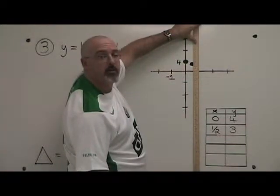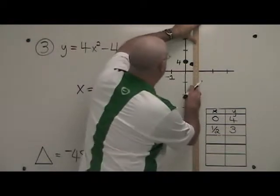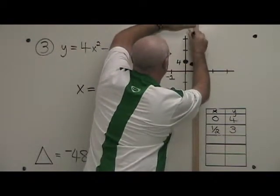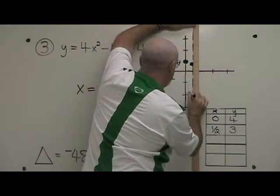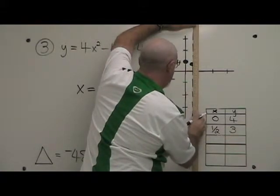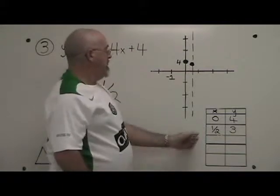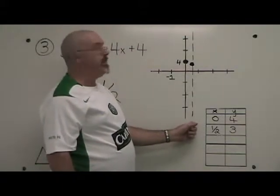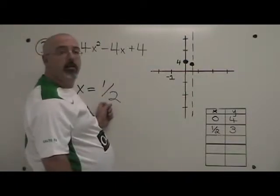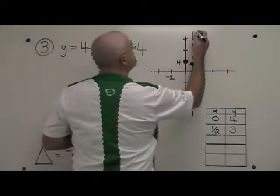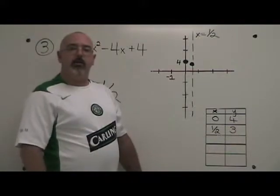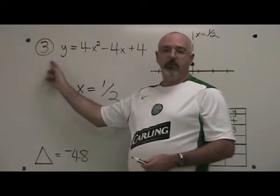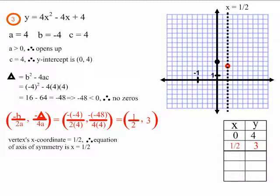The axis of symmetry is a line that goes straight up and down through the vertex. We always show the axis of symmetry as a dotted line and we label it with its equation right on the graph. The equation is x equals one half, so I write x equals one half. This is how you find the equation of the axis of symmetry for example three.